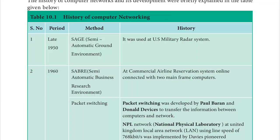In 1950, the first network was named SAGE — Semi-Automatic Ground Environment. It was used by the US military for a radar system. Multiple radar systems were connected to each other, communicating so that they could find the target — identifying target missiles or target aircraft.